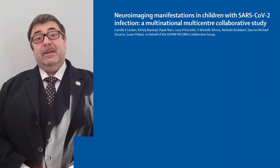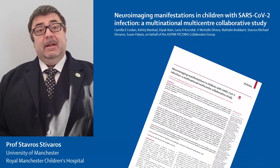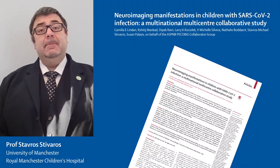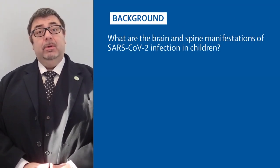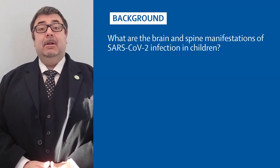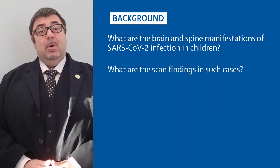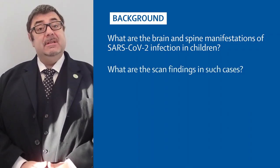Many viral infections affect the nervous system, and at the start of the current global pandemic, it soon became apparent that infection with SARS-CoV-2 would be no different. What was not known was in what way COVID-19 would manifest itself within the brain and spine, and hence what would be the neuroradiological features in children.